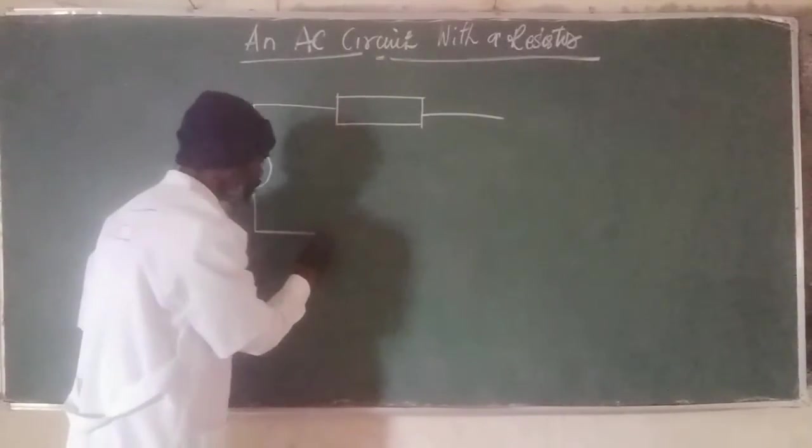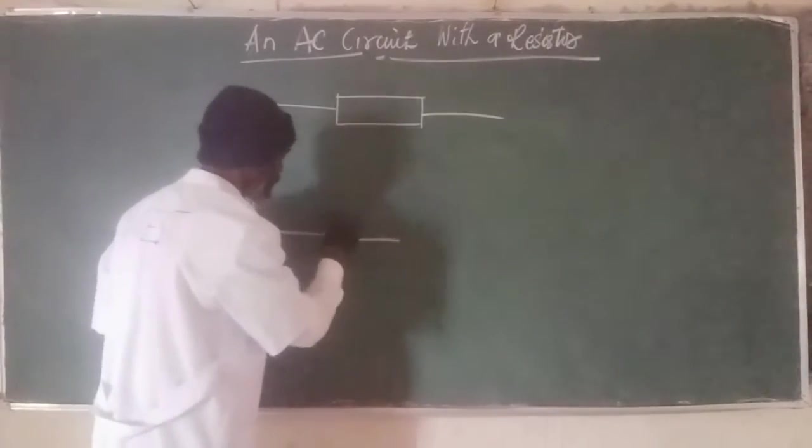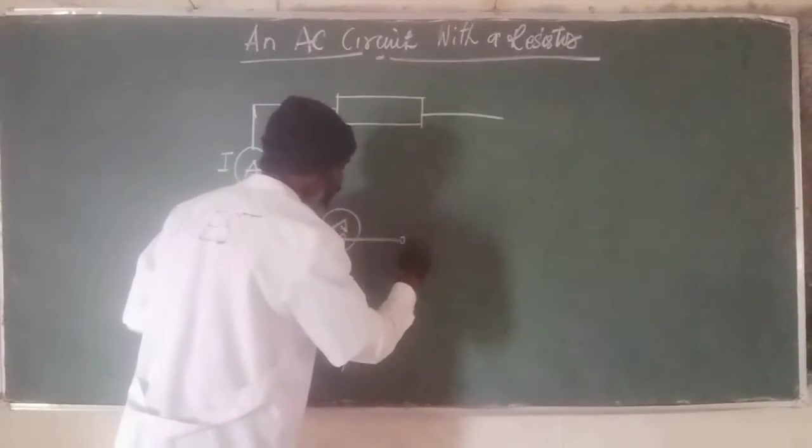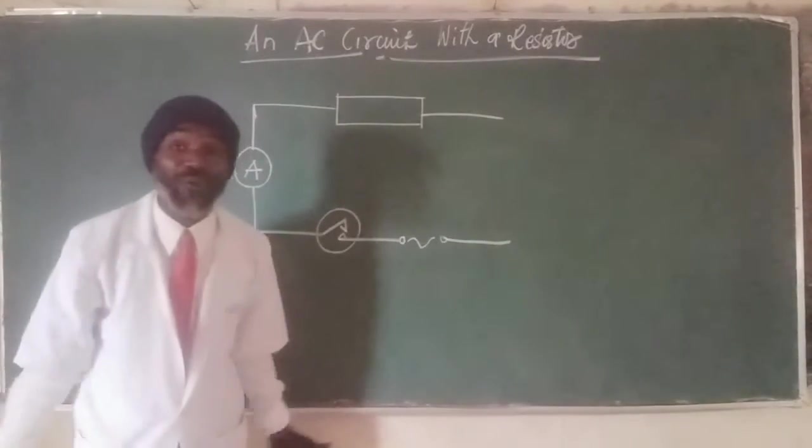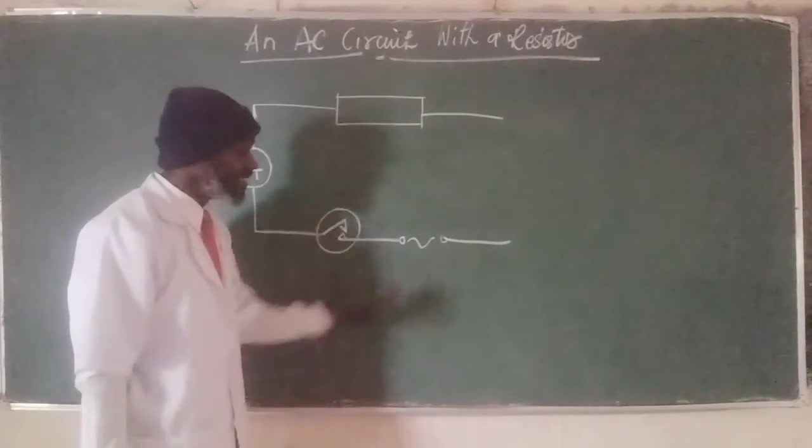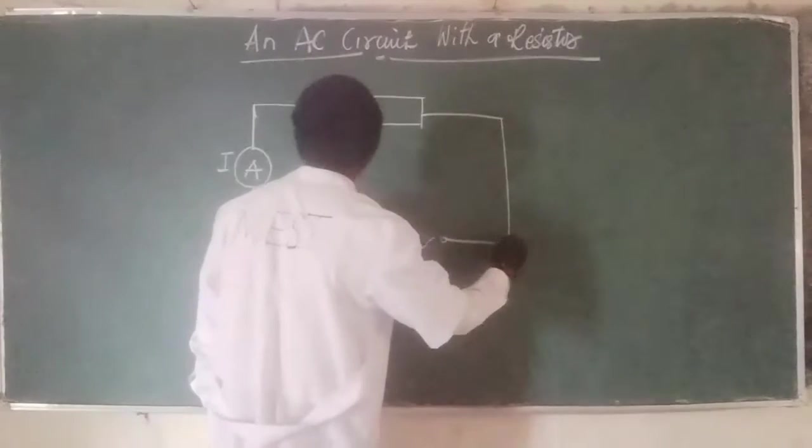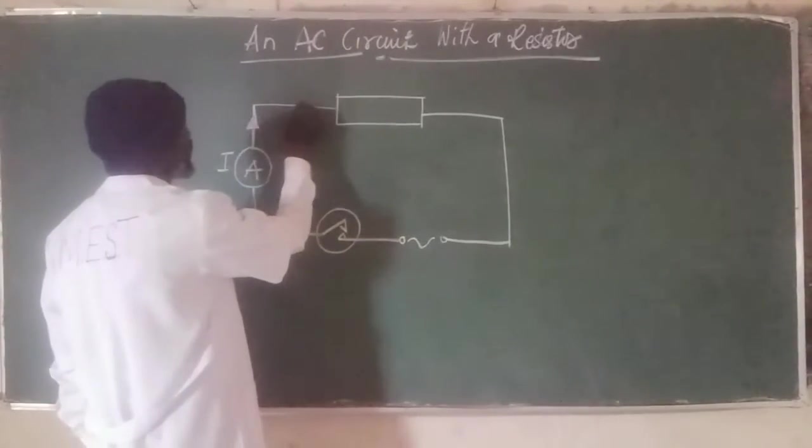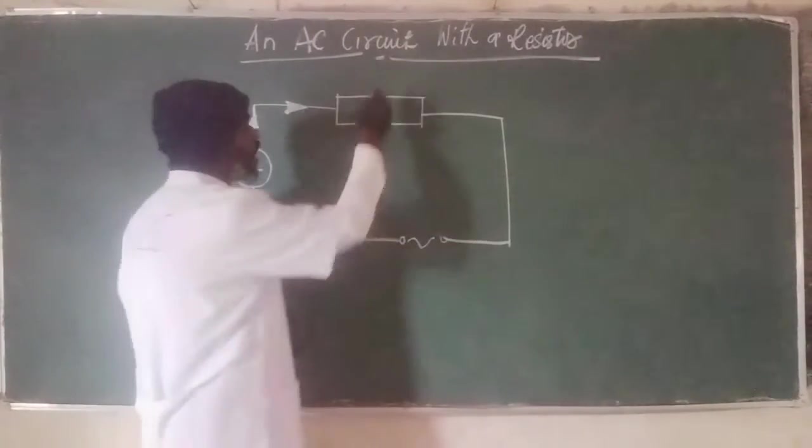Then we come down here. We will have the key or switch that when closed, current flows. Then we have a very simple symbol here that illustrates what we're looking for, or what we're trying to discuss. Current flows from this angle and then enters the resistor R.